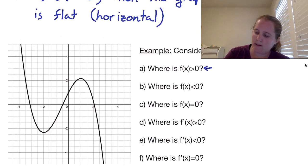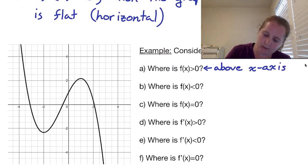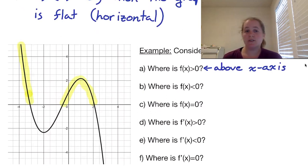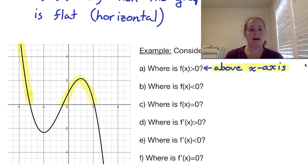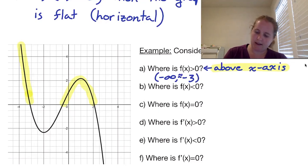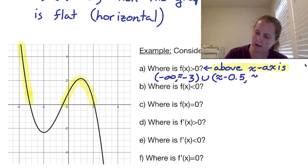We're looking for where the graph is above the x-axis. It's above the x-axis until approximately x equals negative 3, then drops below; then it's above the x-axis between about negative 0.5 and 2, then below again. So f of x is above the x-axis from negative infinity to approximately negative 3, and then again from approximately negative 0.5 to approximately 2.